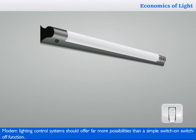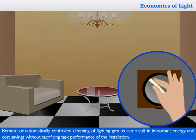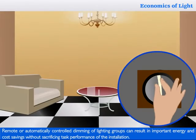Modern lighting control systems should offer far more possibilities than a simple switch-on, switch-off function. Remote or automatically controlled dimming of lighting groups can result in important energy and cost savings without sacrificing task performance of the installation.